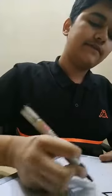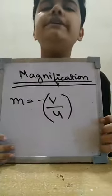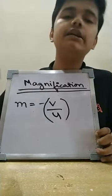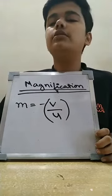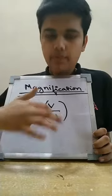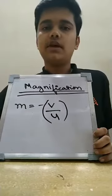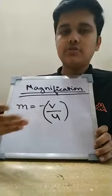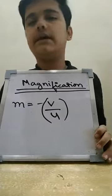Now we'll discuss the second relation for magnification. Magnification has two formulas. The second is: M = −V / U. Note that plus and minus signs are really important for ray diagrams and numerical questions. Here, M equals minus V upon U — meaning the ratio of image distance to object distance. There's a difference between distance and height. These are the formulas you are to apply in questions.